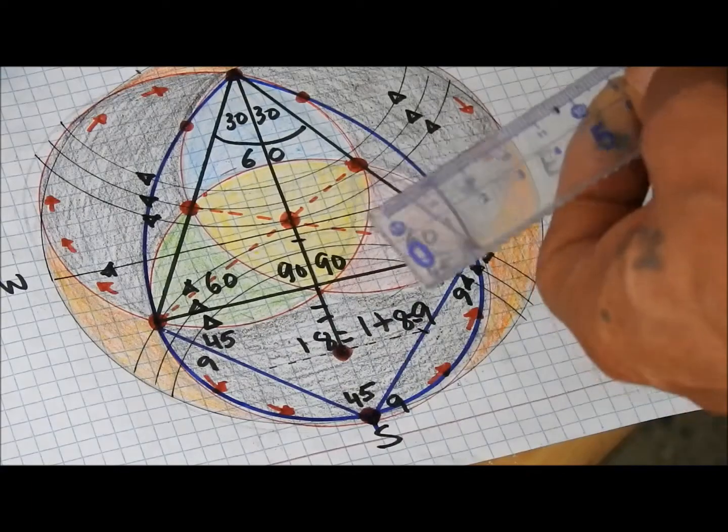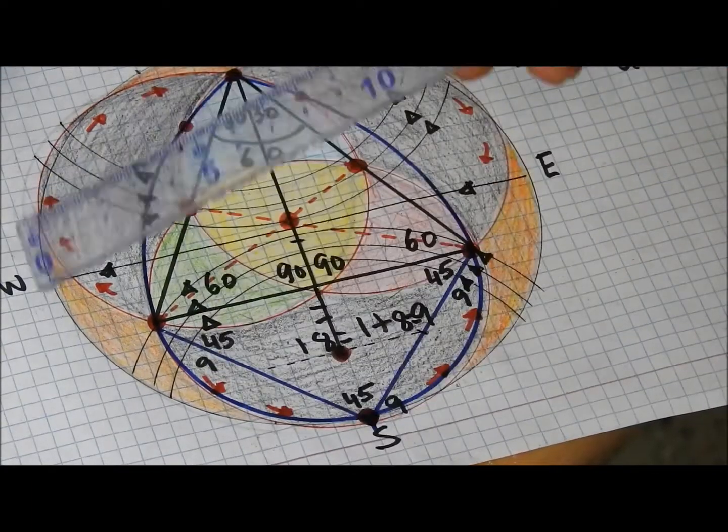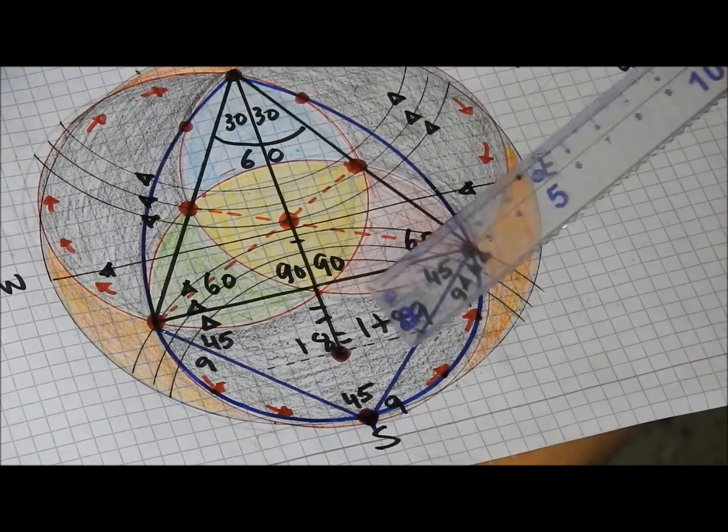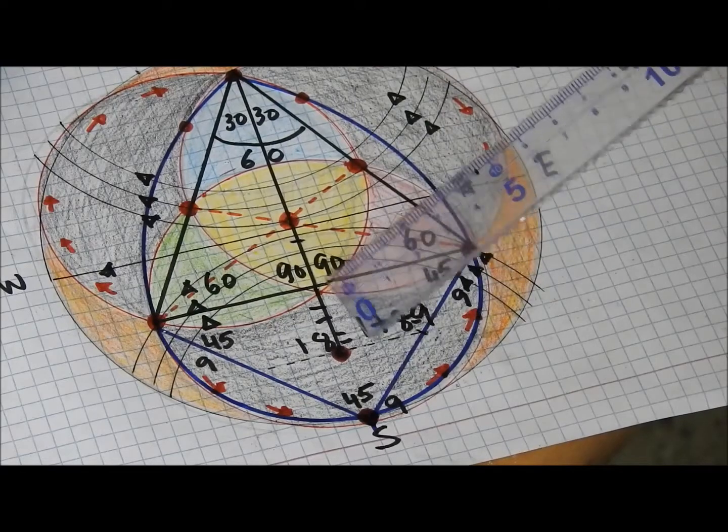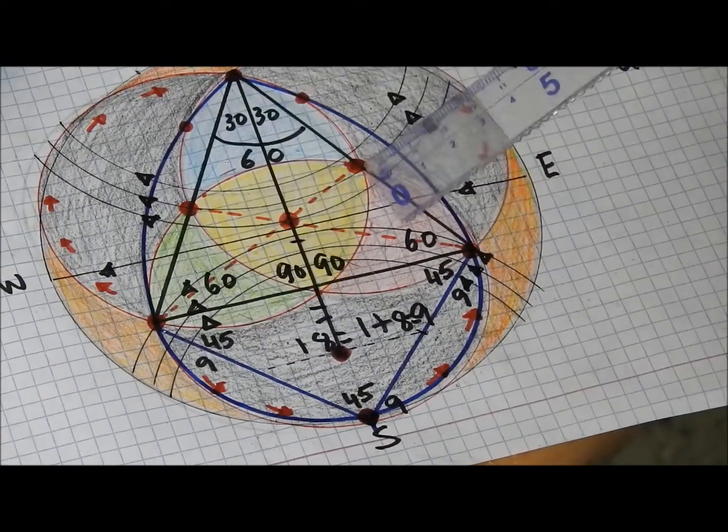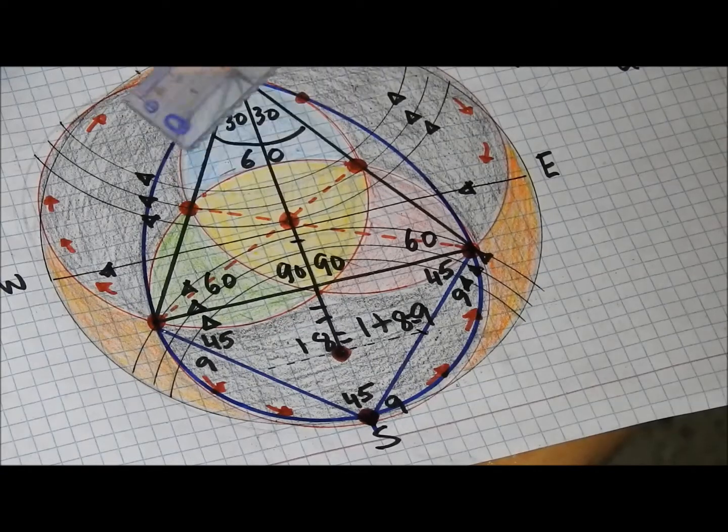So now here we've got the shape of the egg, the Mickey Mouse, and the three horns of the Vikings, which I've explained before.